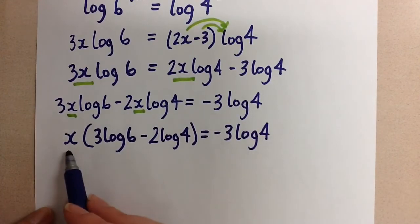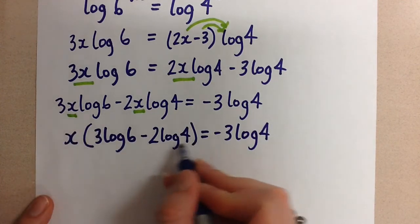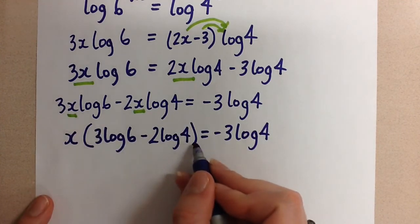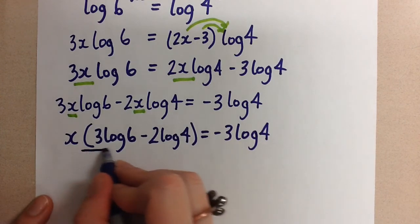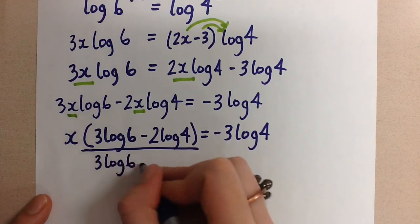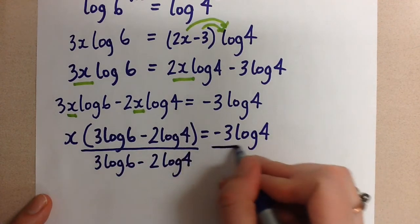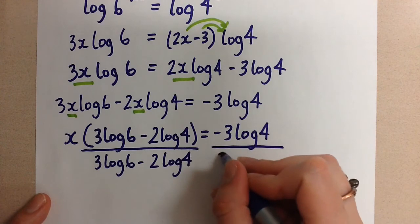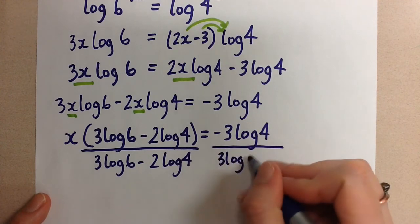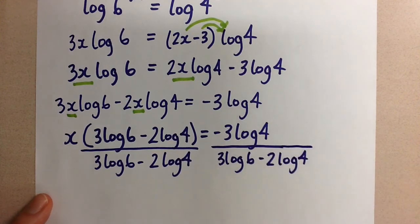Now we can easily solve for the x because this is x times a number. This whole thing is just a number here that can be evaluated. So I can divide by that number to get it over to the other side. I'm just not evaluating it now because then I'm going to have to deal with writing out decimals and I might lose some accuracy and I might make copying errors. So I'm just going to keep the logs in until the very end for the sake of accuracy.